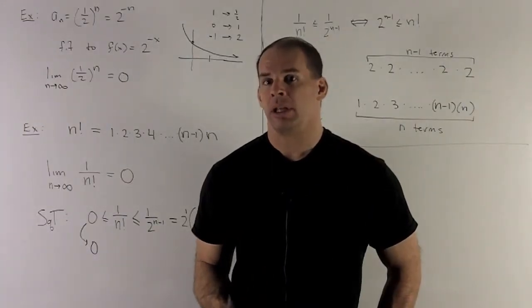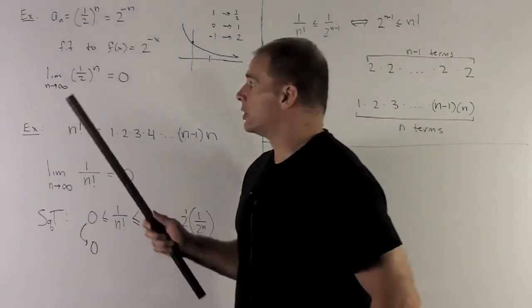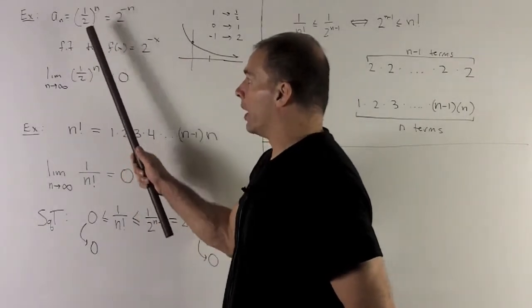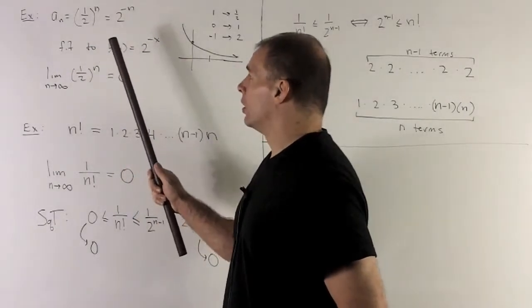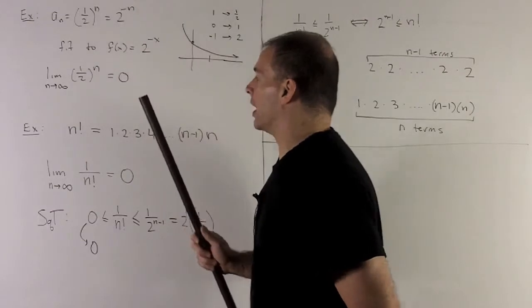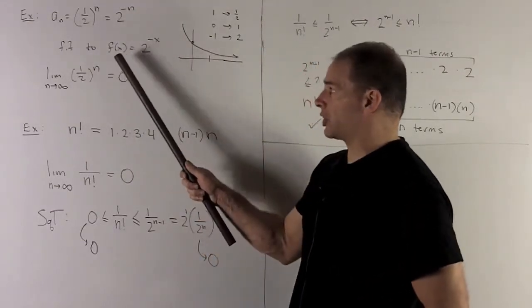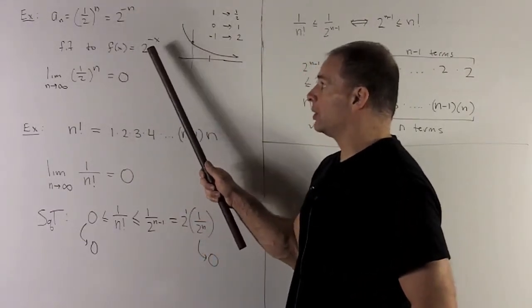Before I get to our next big example, let's do a little warm-up. So I'm going to have a_n equal to (1/2)^n, which I could also rewrite as 2^(-n). We'll fit this to the function f(x) equals 2^(-x).